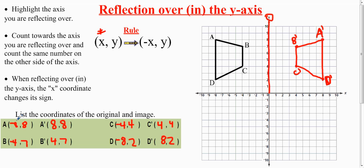You can just look at your coordinates. A is (-8, 8), A prime is (8, 8), so the x changed its sign. Again, B is (-4, 7) and B prime is (4, 7)—x changed its sign. C is (-4, 4) and C prime is (4, 4)—x changed its sign.